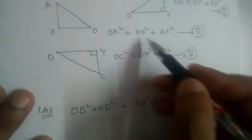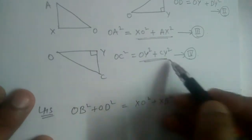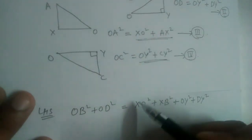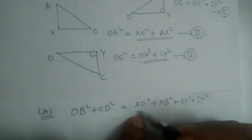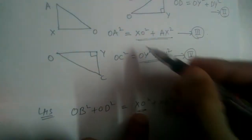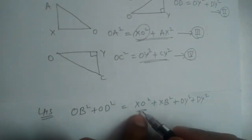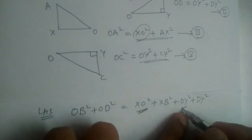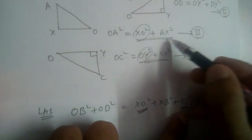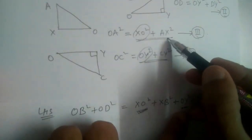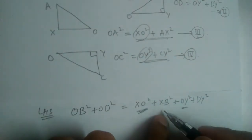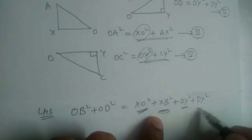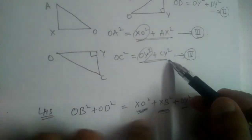This should equal OA² + OC². If you observe carefully, we got XO² — that part is done — and we got OY² — that part is also done. We still need to get AX² and CY² in place of these two remaining terms.